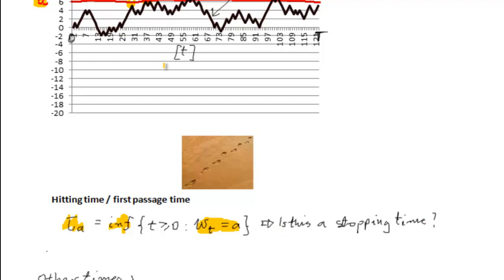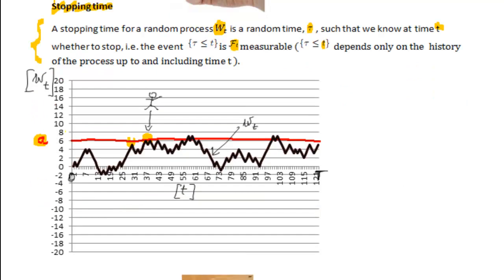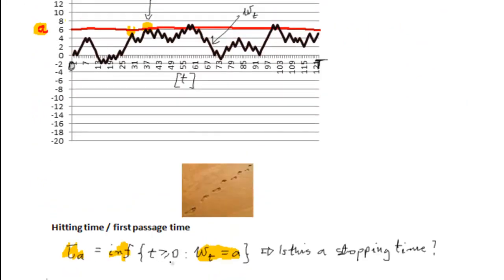Well, can we decide, so say we are staying somewhere here, so we stay here, can we decide whether to stop or not? Well, first time that the random process hits A.